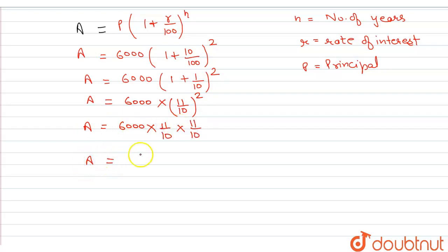Therefore, a is equal to rupees 7260. And in this sum, we want to find compound interest. Formula for finding compound interest is amount minus principal.